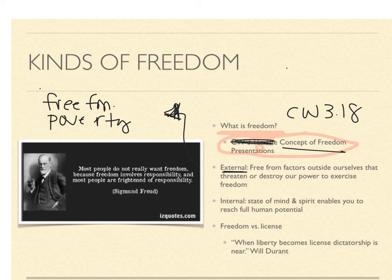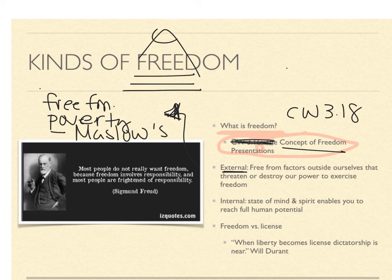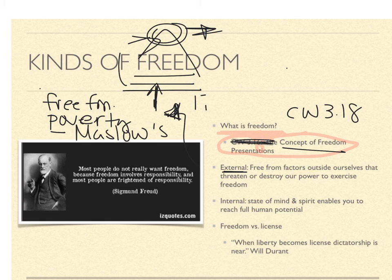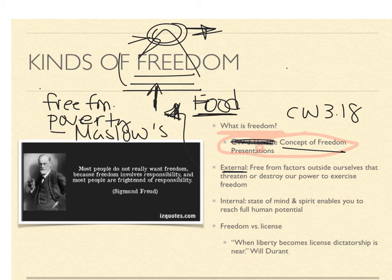If you've taken psychology, you might have heard of Maslow's hierarchy of needs. At the very top is self-actualization — becoming the best person you can be — but you can't get there unless you meet more basic needs. At the bottom of the pyramid are things like food and water. If you are in poverty, you're not free to be who you really should be; you're in a day-to-day struggle just to survive. So there are external things that can affect our freedom and destroy our power to exercise it.